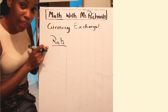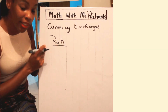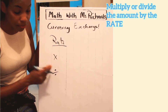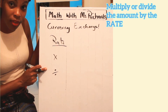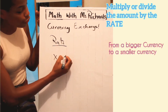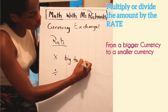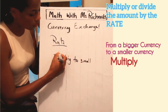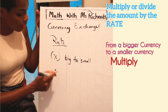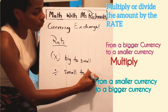Once you have the rate, what you're going to do with your rate is to multiply or divide. From big to small, multiply. And then from small to big, divide.